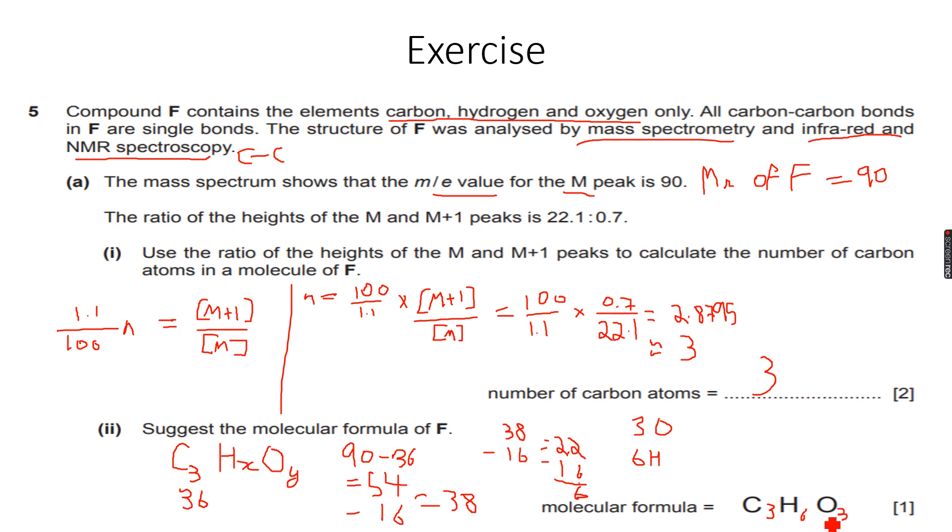The molecular formula of compound F is C3H6O3. That's how you tackle this question. These questions need some common sense because there cannot be 38 or 22 hydrogens in such a small molecule with just three carbons.